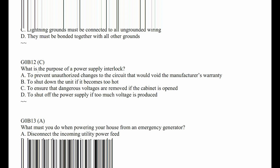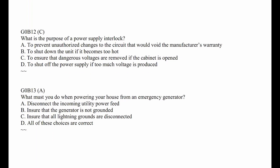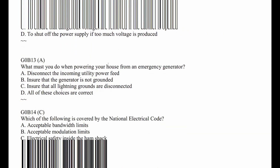G0B12: What is the purpose of a power supply interlock? It's to shut things off — to ensure dangerous voltages are removed if the cabinet is opened. That's called an interlock. It's a switch sometimes on the lid, and it can be cheated, but that's not a smart thing to do.